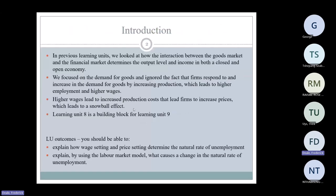This learning unit doesn't really build on the previous ones. The previous units looked at the interaction between goods markets and financial markets, output levels, and exchange rates in open or closed economies. This unit really deals with firms' wages and prices — specifically wage and price determination. It's a building block for learning unit nine, which ties everything together. You don't need much from units one to seven to understand this unit, but it is important for the next one.